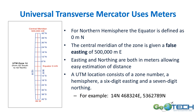This is what one UTM zone looks like. It has locational values: for the northern hemisphere, the equator is defined as 0 north, and the central meridian of the zone is given a false easting of 500,000 meters east. Easting and northing are both in meters, allowing easy estimation of distances. Each UTM zone consists of a zone number, a hemisphere, a 6-digit easting, and a 7-digit northing. Some places you will see the E and the N; some places it will just have the zone number and hemisphere followed by the two sets of numbers.